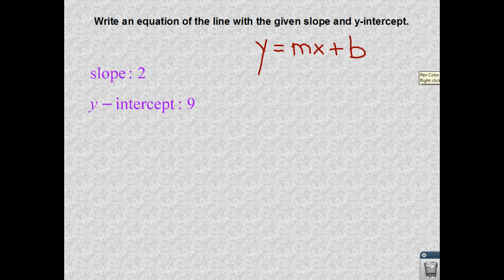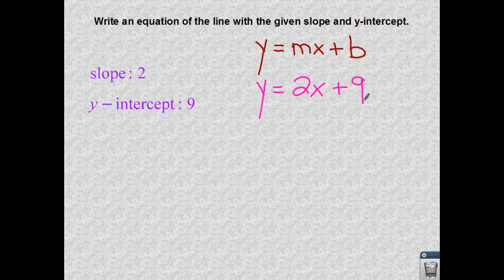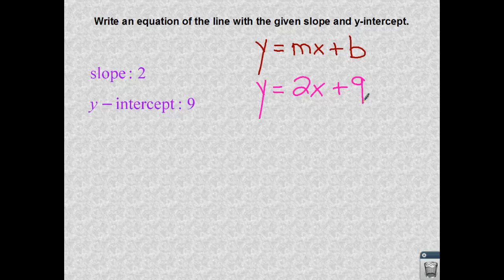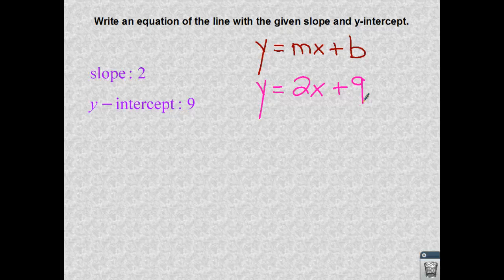So if I'm given the information, it is basic substitution, so I know that y is equal to the slope, which is 2, my m is 2, x, and my y-intercept is given as a positive 9. So I put positive 9, and you can do many things with this. You can create a function table and plot some points, or you're going to learn how to take that information and make a line on a grid using that y-intercept and your slope.